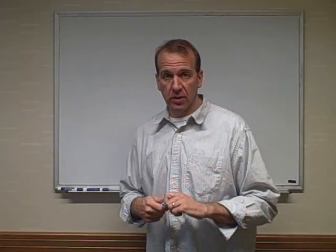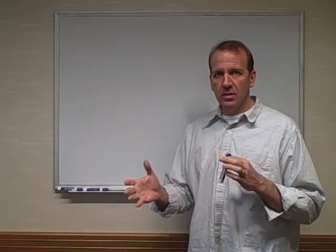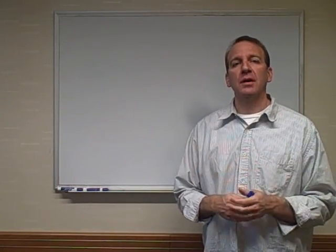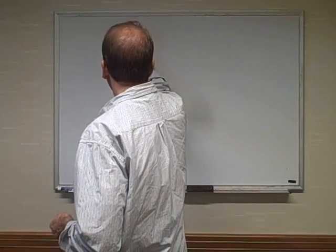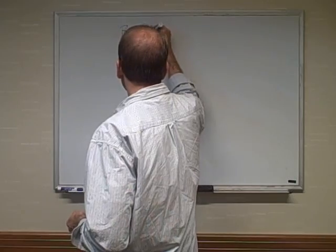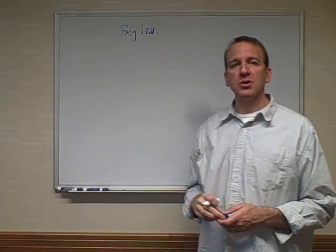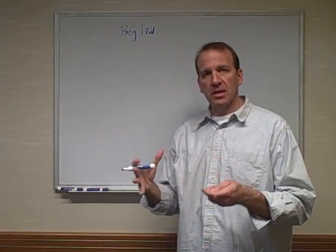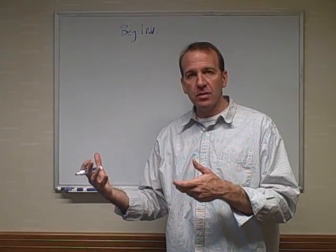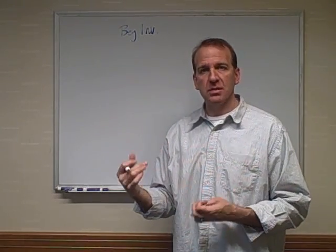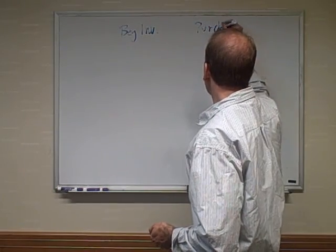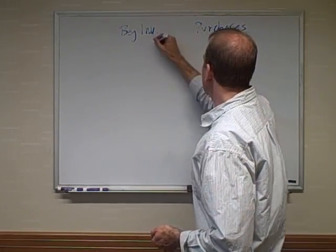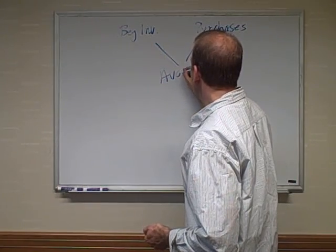In this first video, we're going to look at inventory cost flows to make sure you understand how inventory comes in and goes out of businesses. The first thing we need to be aware of is beginning inventory. We're a company that has inventories and makes purchases during the year. Beginning inventory plus purchases during the year gives us what we have available to sell.